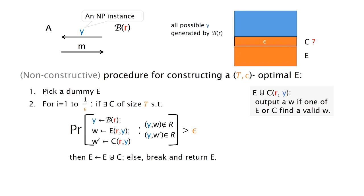Thus, if for any step i, the answer is yes, then at the end of this procedure we will have an extractor with a success probability 1, which is of course optimal. And otherwise, if for some step i, the answer to this question is no, then we also have a T-epsilon optimal extractor. Note that the final extractor obtained by this procedure is of size at most T over epsilon.